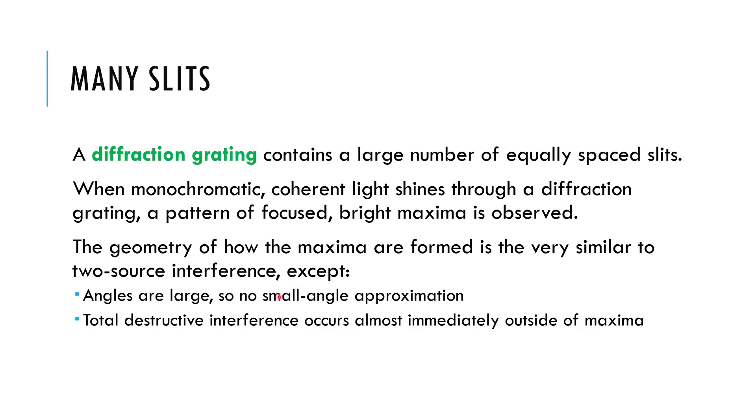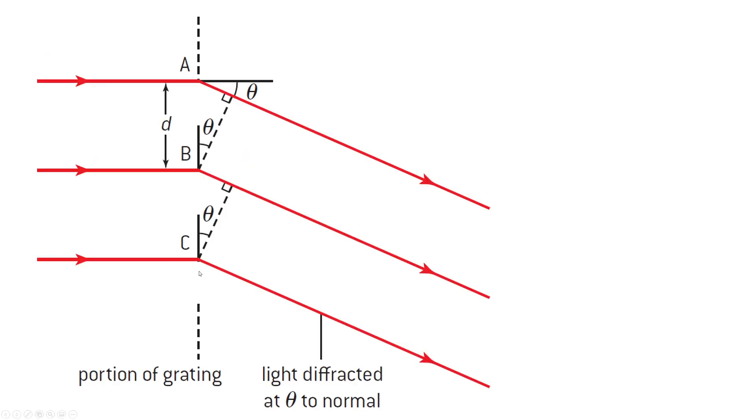We want big angles. And so we put the slits very close together, usually by scoring some kind of material. And so the angles are going to be big, so we can't call sine of theta about equal to theta anymore. And what we see is that there's total destructive interference immediately outside of our maxima. So the bright spots are very bright, and right outside of the bright spot, it's totally dark. Which is kind of the point. You want to really separate these colors by wavelength.